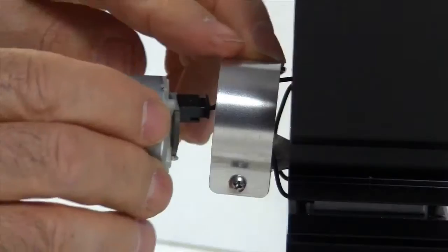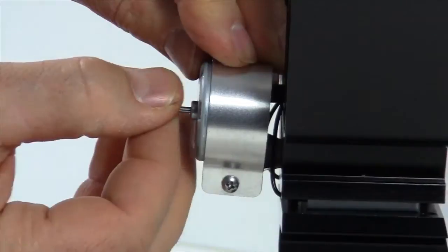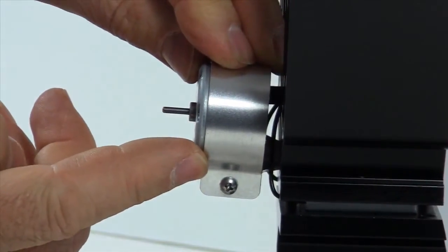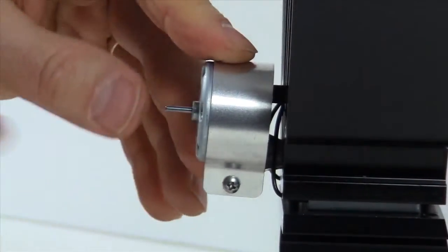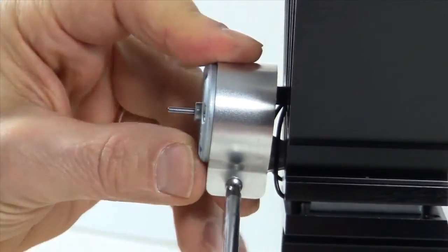Now we put the motor back into the motor bracket. And we want to leave the motor sitting about a sixteenth of an inch outside of that motor bracket. Then we want to tighten that screw to secure it in place.